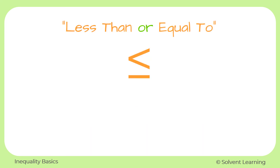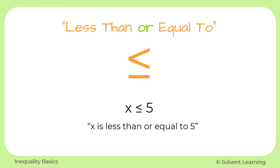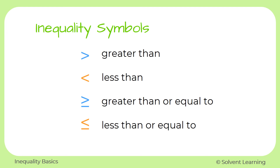Now we have less than or equal to. The top part of the symbol is the less than symbol, and then we have the line that represents the equal to part. So we would read this as x is less than or equal to 5 — x could be equal to 5, or it could be any number smaller than 5. Here are all four inequality symbols written together. This is definitely something you want to remember and have written down so that when you see this in different types of problems, you'll know just what that symbol represents.